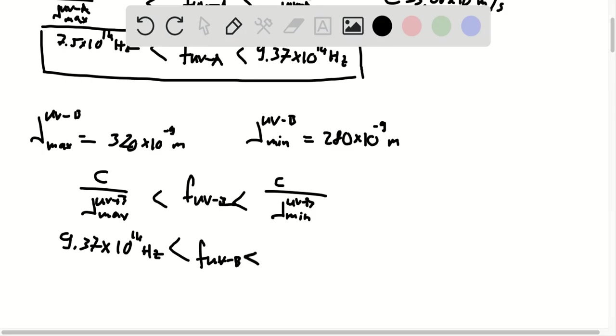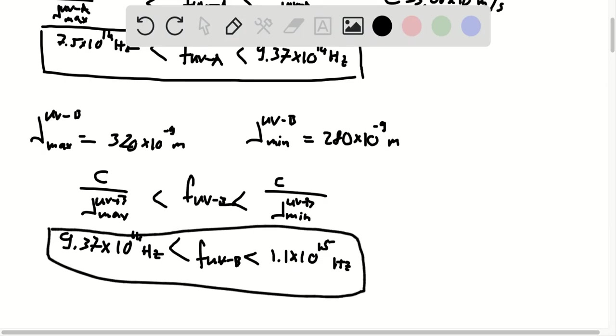UVB radiation. Whereas the maximum frequency works out to be 1.1 times 10 to the 15 hertz. And so this is the band of frequencies for UVB radiation.